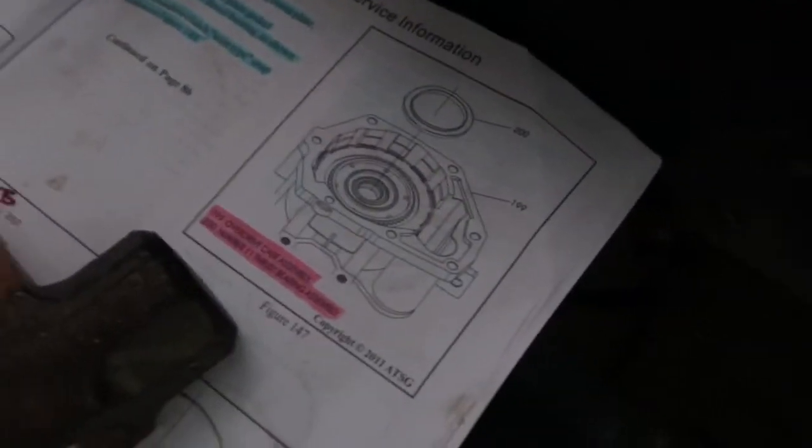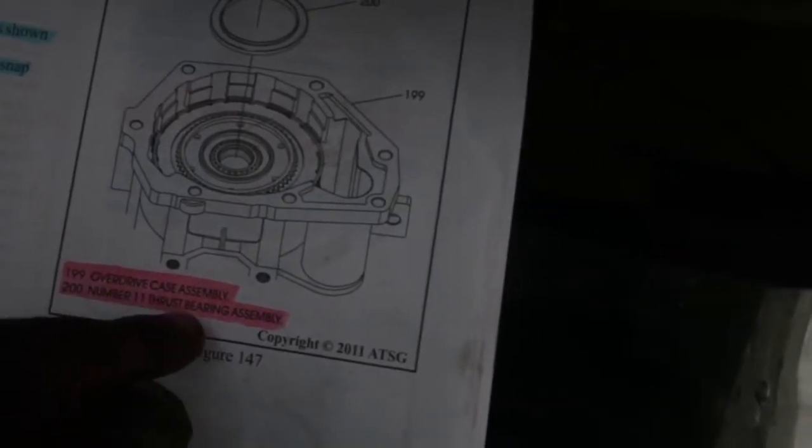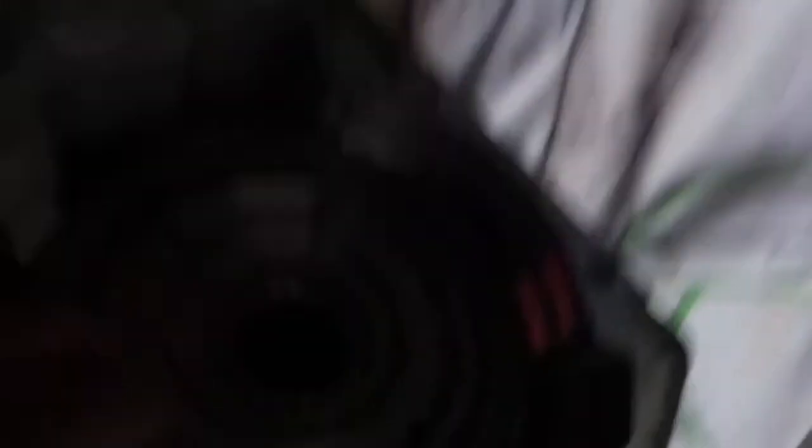It tells you to remove and discard the cover plate gasket. I just kept it. I'm not even sure if my new kit has one in there now, I didn't even check that. Step three: remove number 11 thrust bearing as shown in figure 147. This is figure 147. So flip this up.